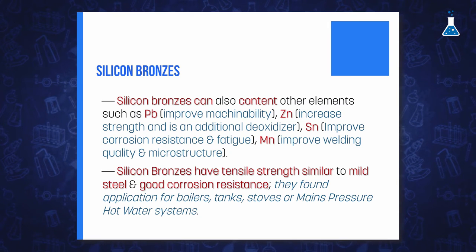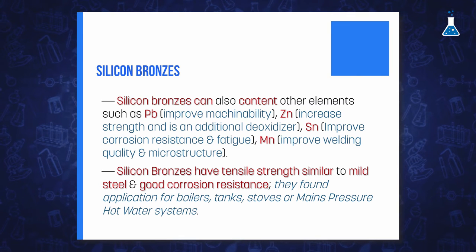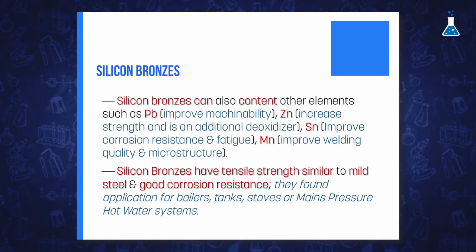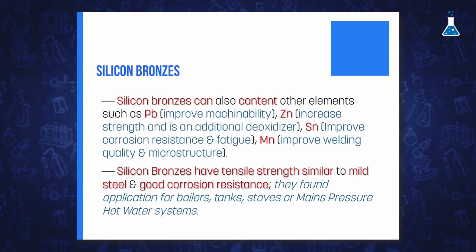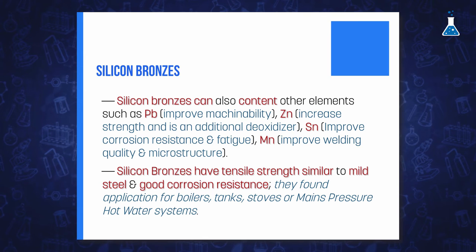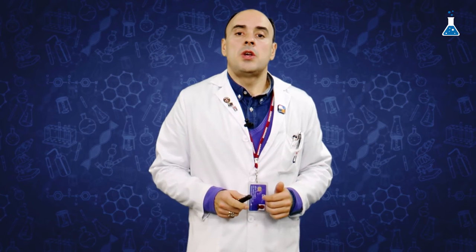This tensile strength, in conjunction with good corrosion resistance even when submerged in liquids and chemicals, makes silicon bronzes very useful for boilers, tanks, stoves, and main pressure hot water systems.